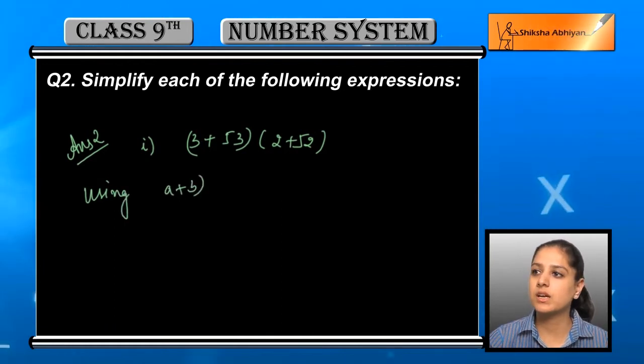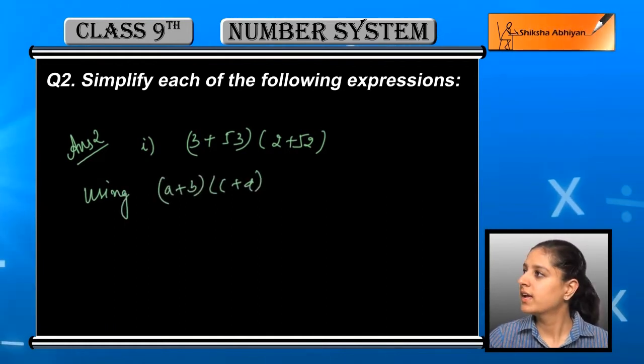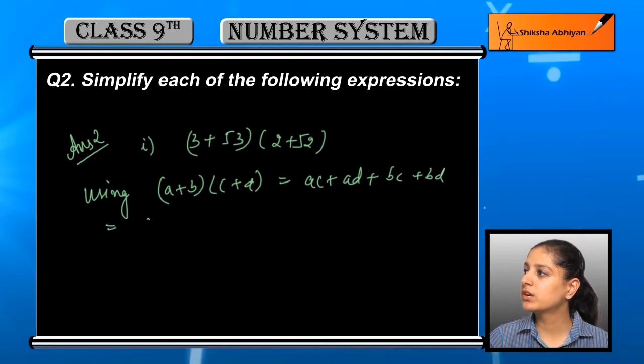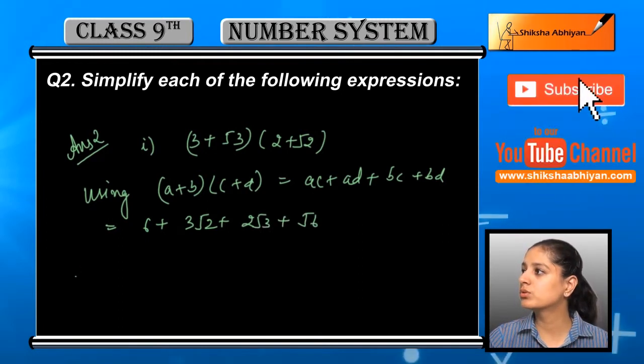The identity is (a+b)(c+d) which gives us ac + ad + bc + bd. So, 3 into 2 is 6, 3 into √2 is 3√2, √3 into 2 is 2√3, and √3 into √2 is √6. This is the expression.